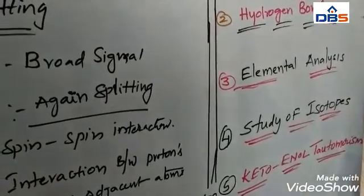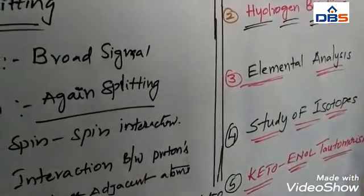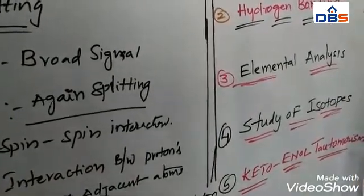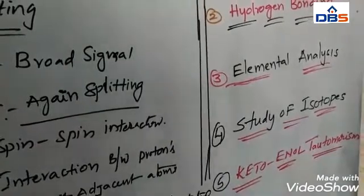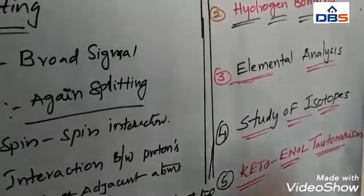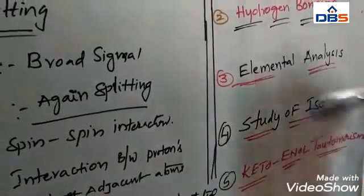Another important application is the study of isotopes. Generally, several nuclei, in addition to the proton, which have a magnetic moment, can be studied by using the NMR technique.